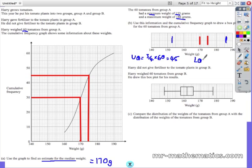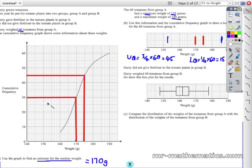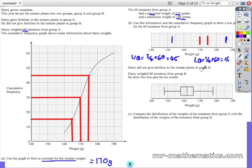Now the lower quartile is at 1 quarter of the maximum cumulative frequency which is 15. So we will go back to our graph from 15 to the curve and then from the curve back to the x-axis and that has got a weight of 165 grams.